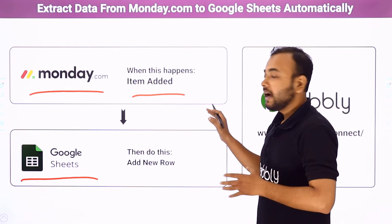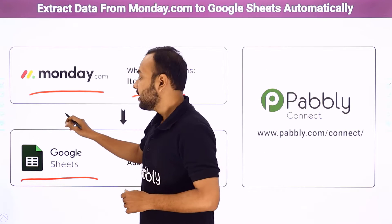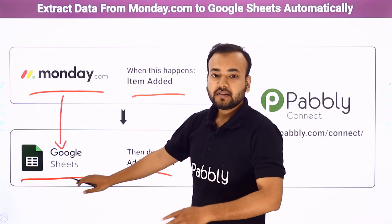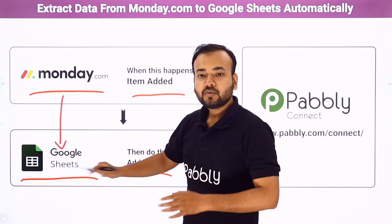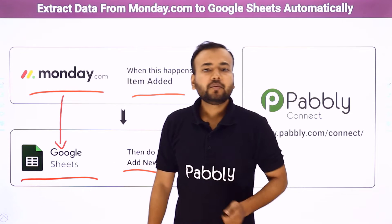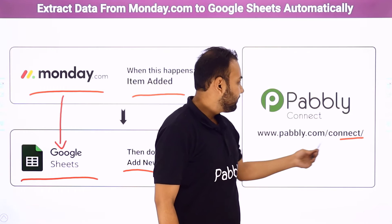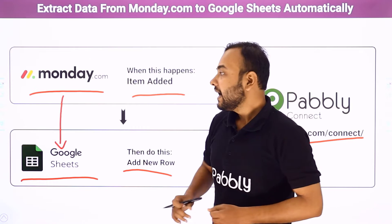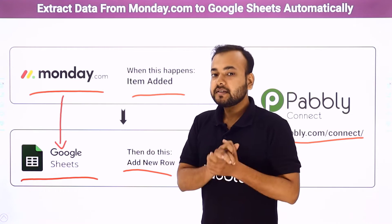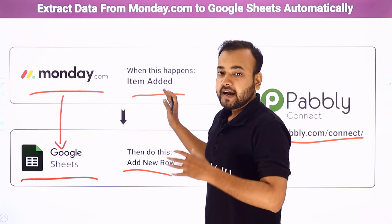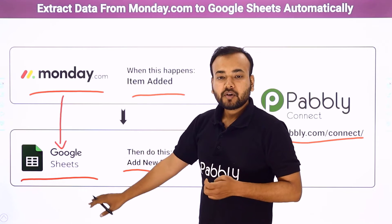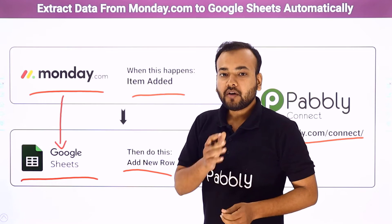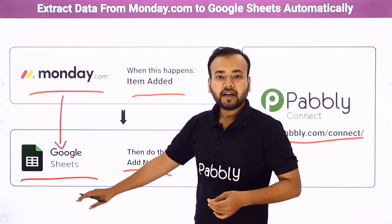What if I tell you that all the items that you have added in Monday.com will get automatically transferred and saved in new rows in the spreadsheet you have created in Google Sheet? This can happen, and to make this happen, I am using a software called Pabbly Connect. Pabbly Connect is an integration and automation software and it will connect these two applications together so that whatever items you have added will get automatically transferred to your Google Sheet.